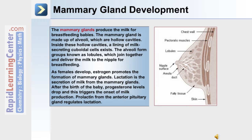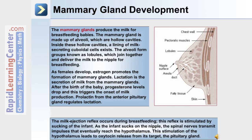Lactation is the secretion of milk from the mammary glands. After the birth of the baby, progesterone levels drop, and this triggers the onset of milk production. Prolactin from the anterior pituitary gland regulates lactation. The milk ejection reflex occurs during breastfeeding and is stimulated by the sucking of the infant. As the infant sucks on the nipple, spinal nerves transmit impulses that eventually reach the hypothalamus. This stimulation of the hypothalamus leads to oxytocin release from its target, the pituitary gland.